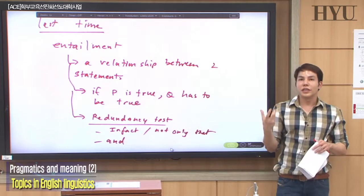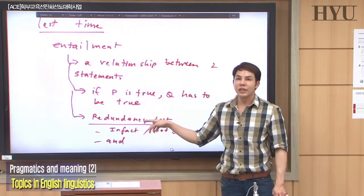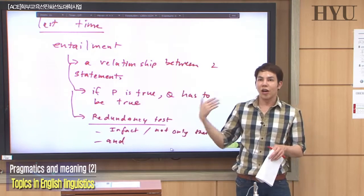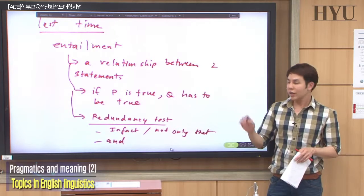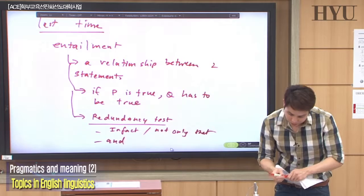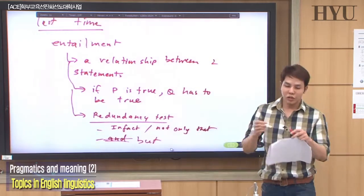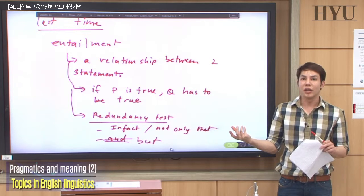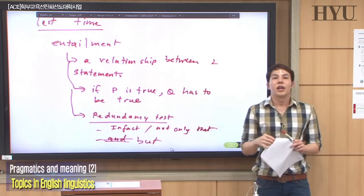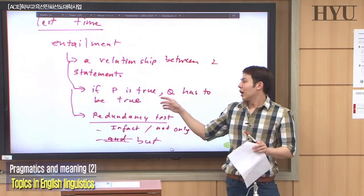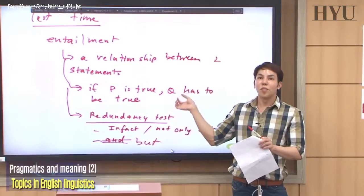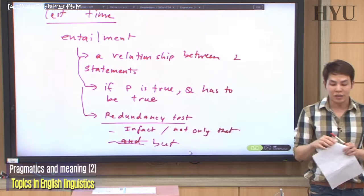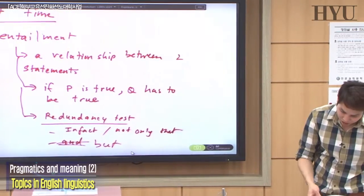There's a test for entailment called the redundancy test. You can use 'in fact' or 'but' to join two statements. If they sound redundant, it means they are in an entailment relationship. The redundancy test works because when you have an entailment, the second statement is usually included or part of the first statement. So if you say the second statement once again, it will sound redundant.